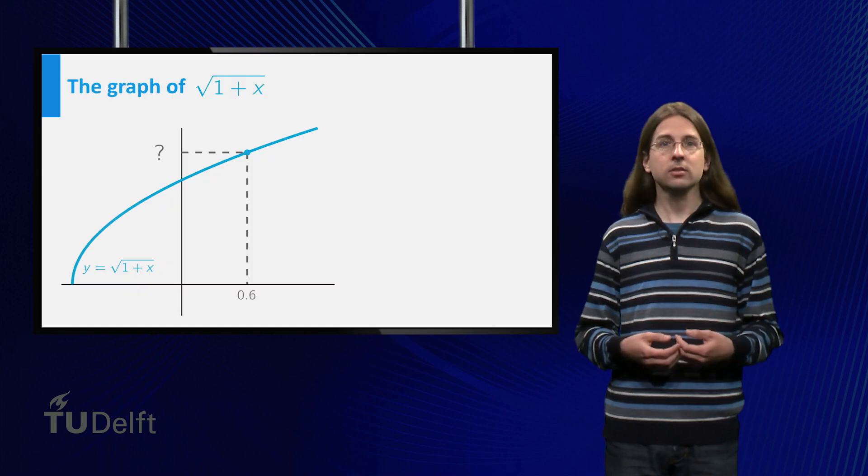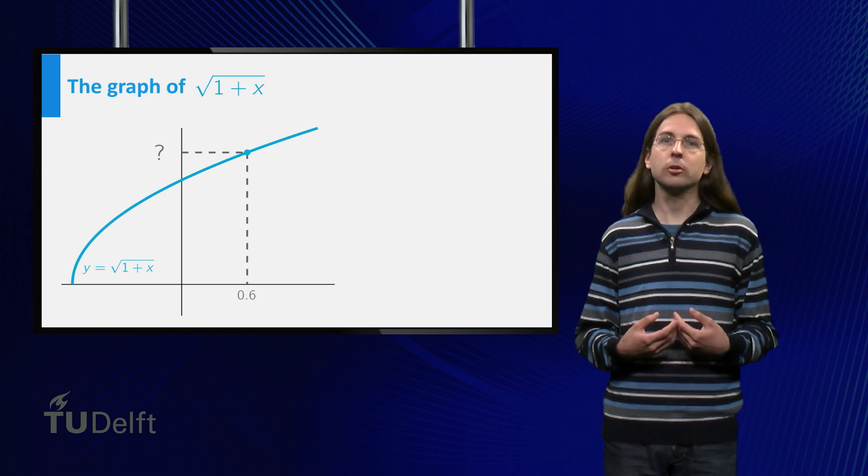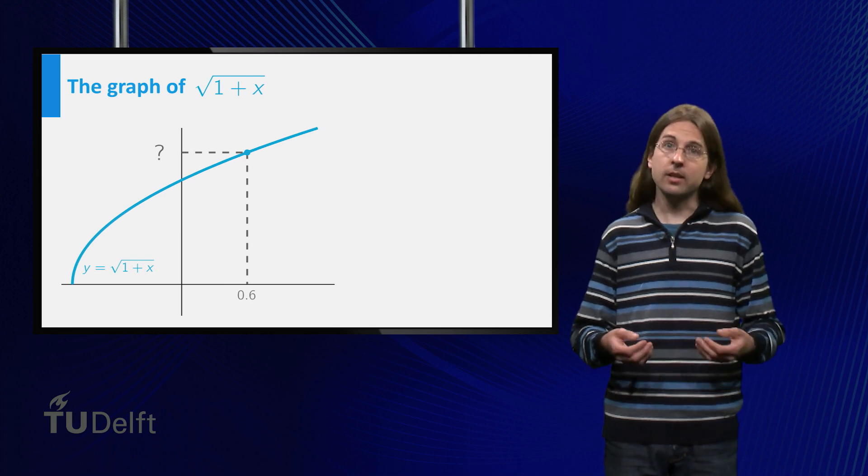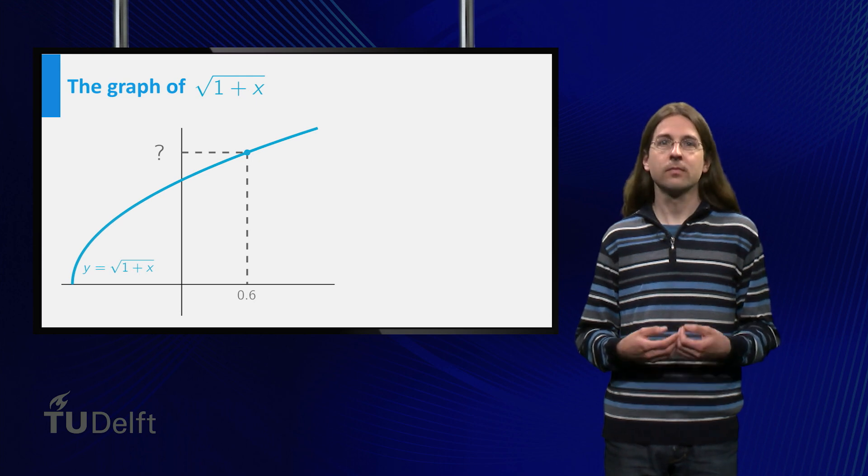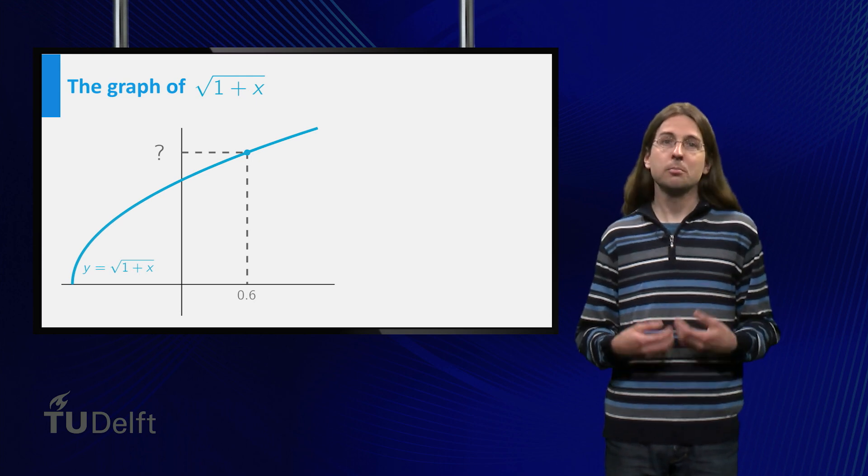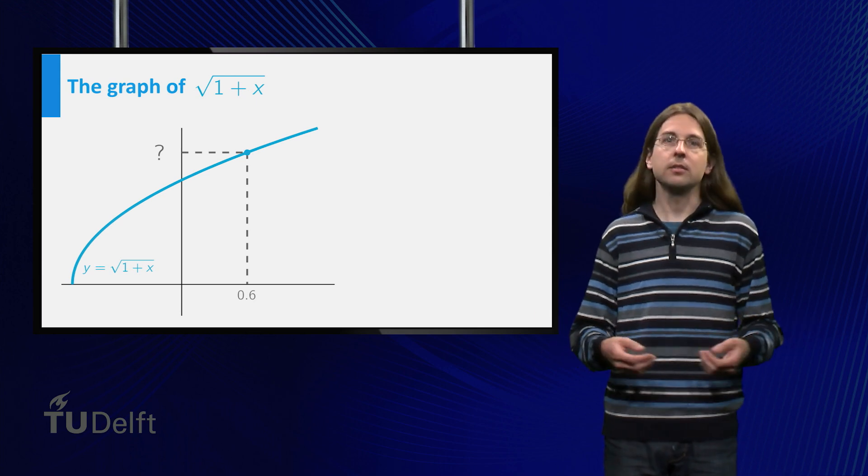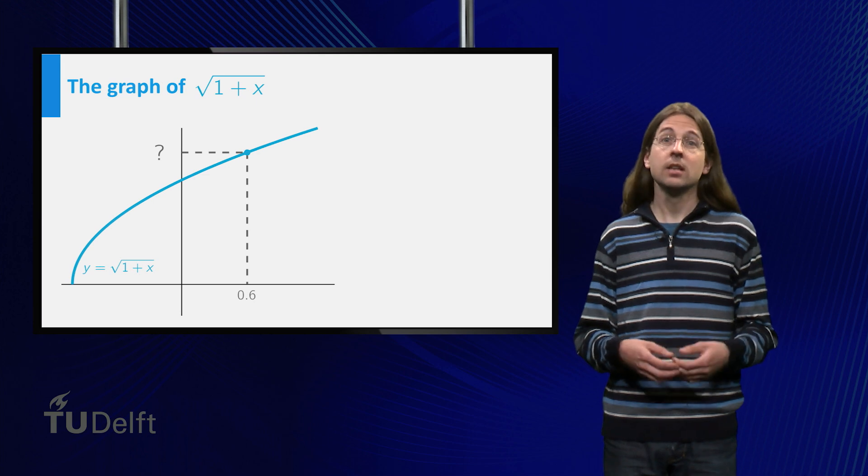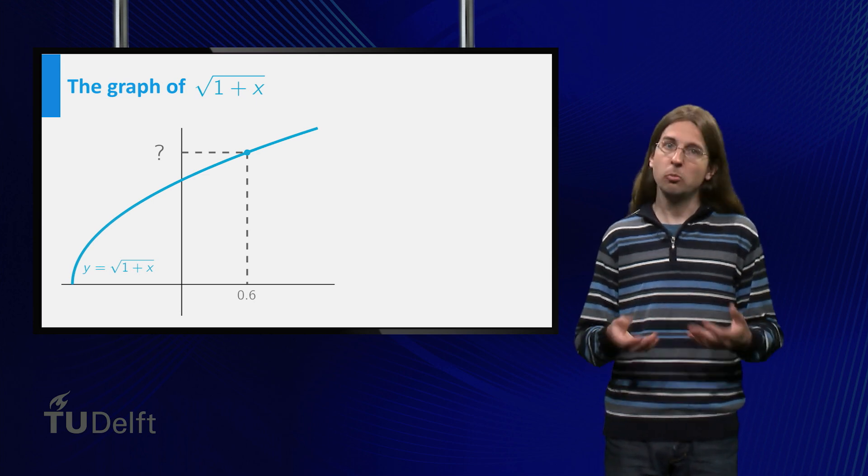Let us consider the graph of the function square root of 1 plus x, and look at the point x equals 0.6. That is, we want to calculate the square root of 1.6. A first approximation might be to say that 0.6 is close to 0, and thus the value of our function at x equals 0.6 is approximately equal to the value at x equals 0, which is 1.